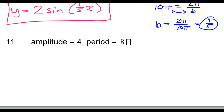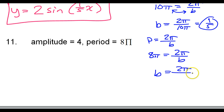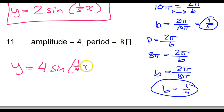Next one. The period is 2 pi over b. That means 8 pi is equal to 2 pi over b. Reversing these, b equals 2 pi over 8 pi. The pi's cancel, and 2 eighths reduces to 1 fourth. So the equation is y equals 4 sine of 1 fourth x.